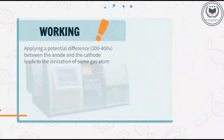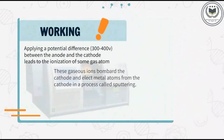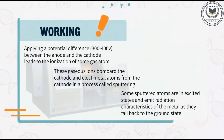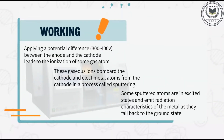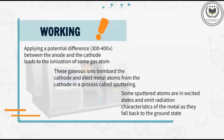Applying a potential difference of 300–400V between the anode and the cathode leads to the ionization of some gas atoms. These gaseous ions bombard the cathode and eject metal atoms from the cathode in a process called sputtering. Some sputtered atoms are in excited states and emit radiation characteristic of the metal as they fall back to the ground state.